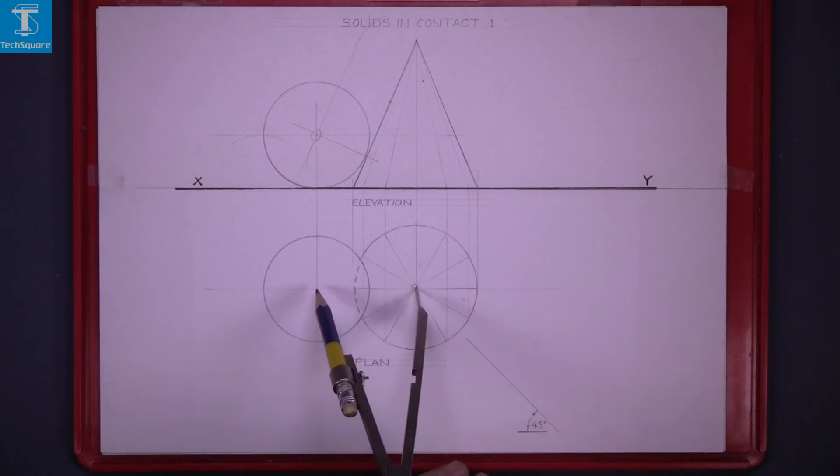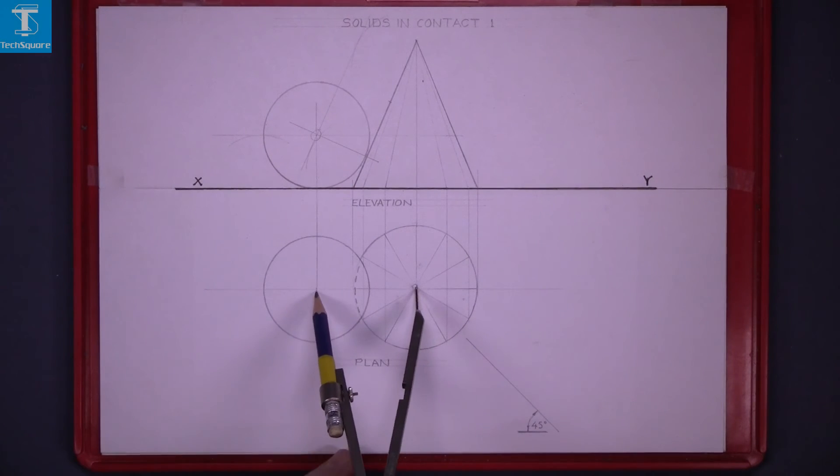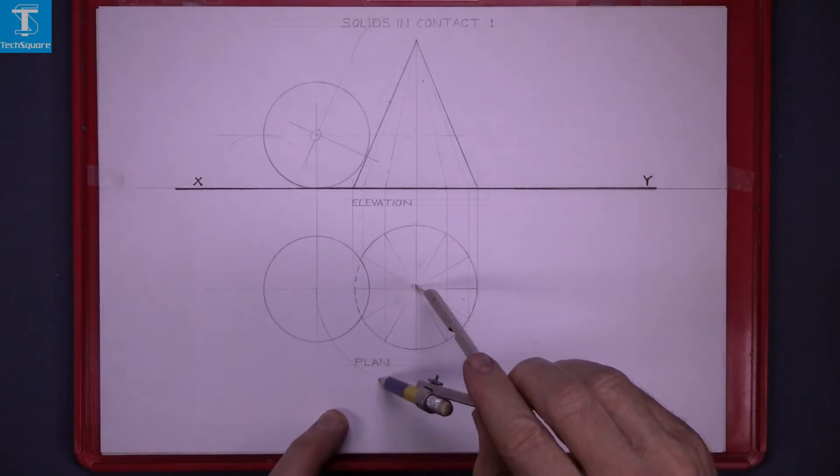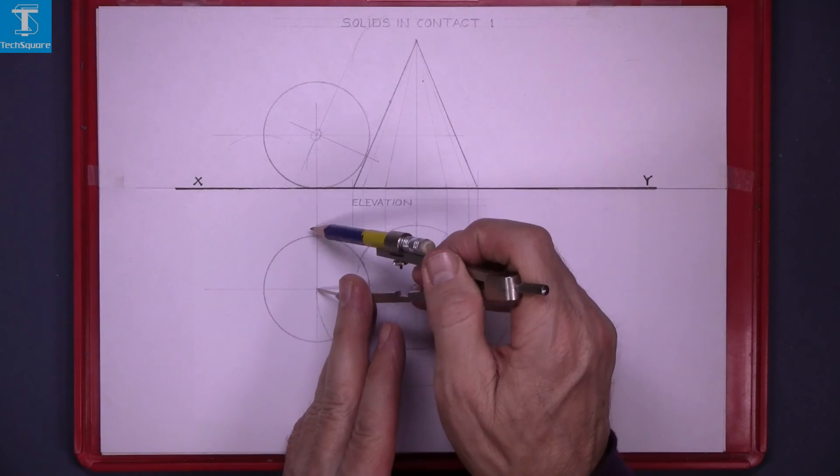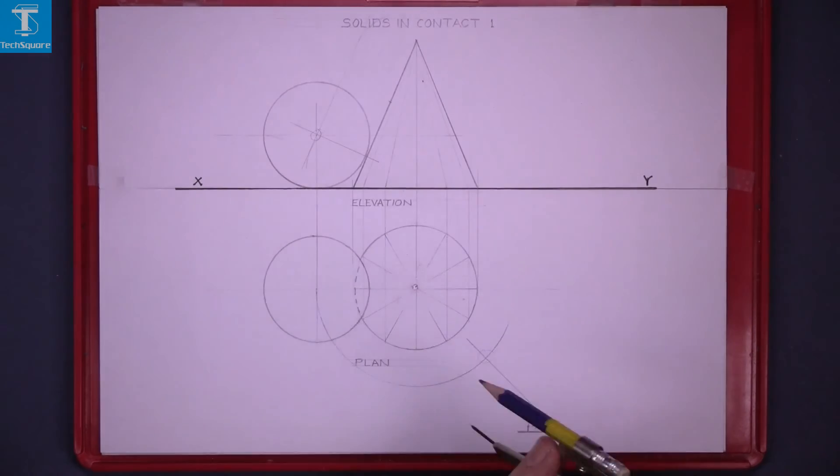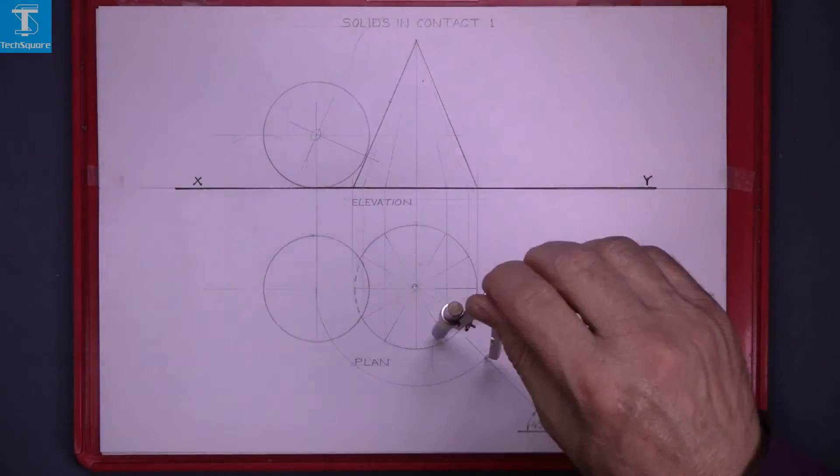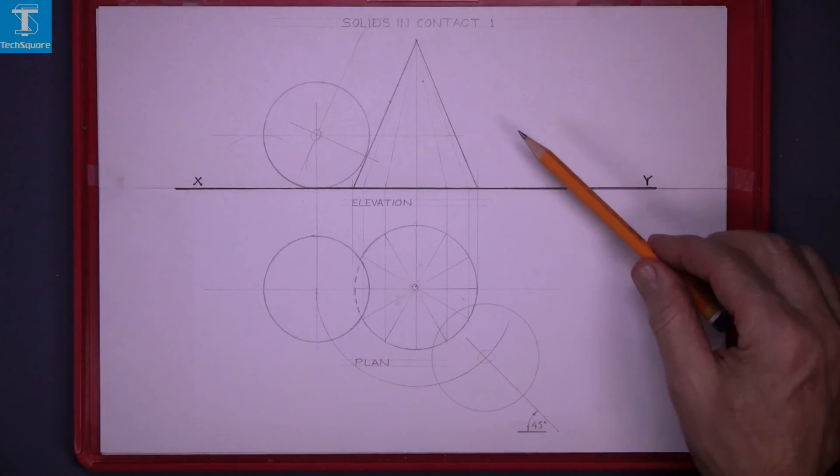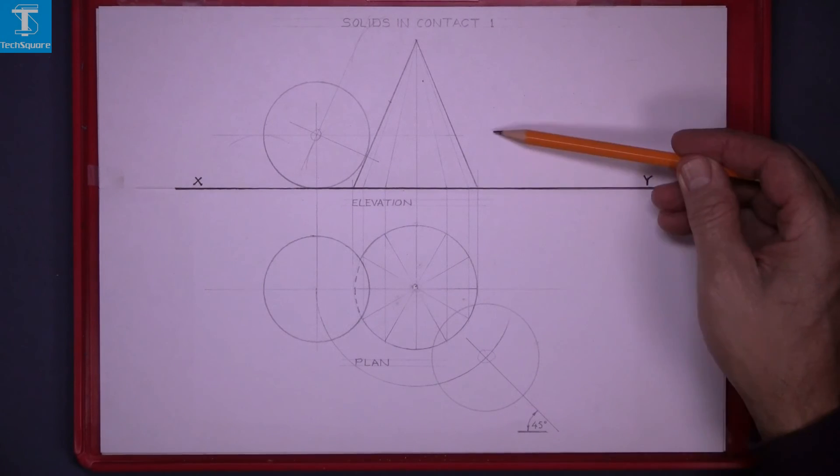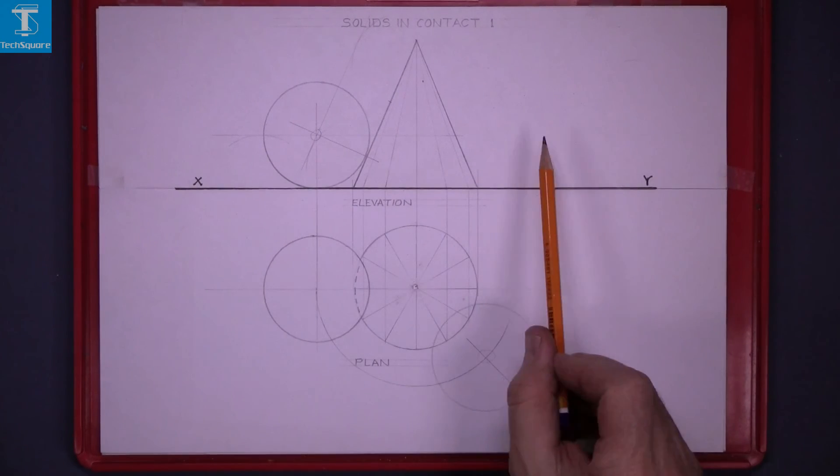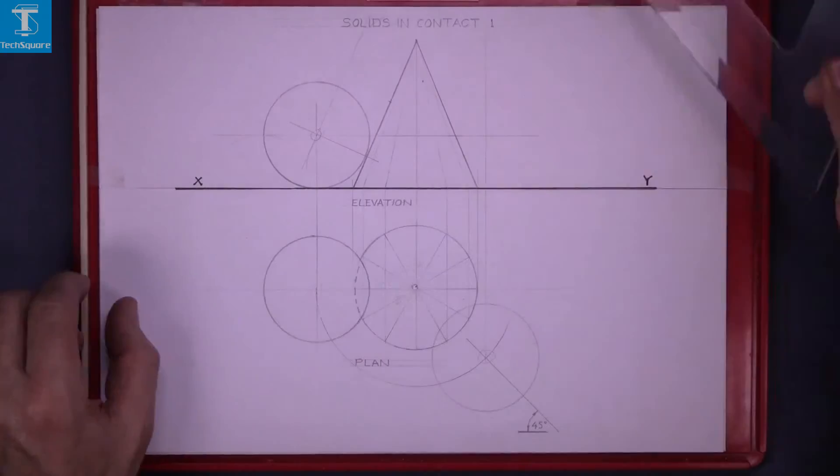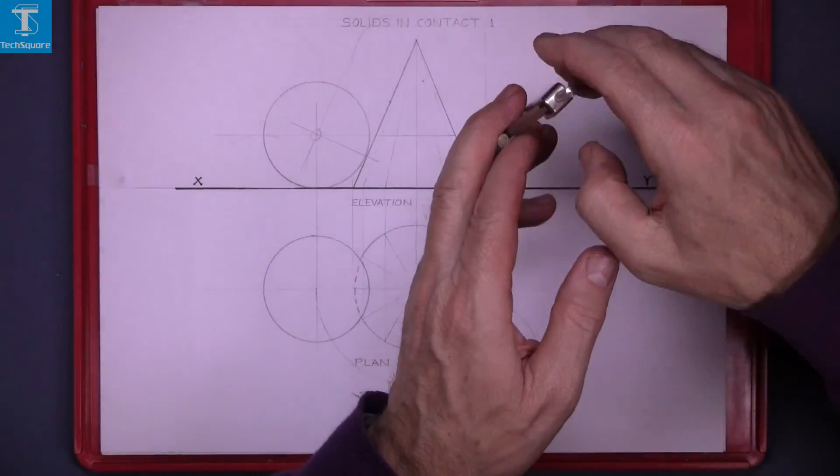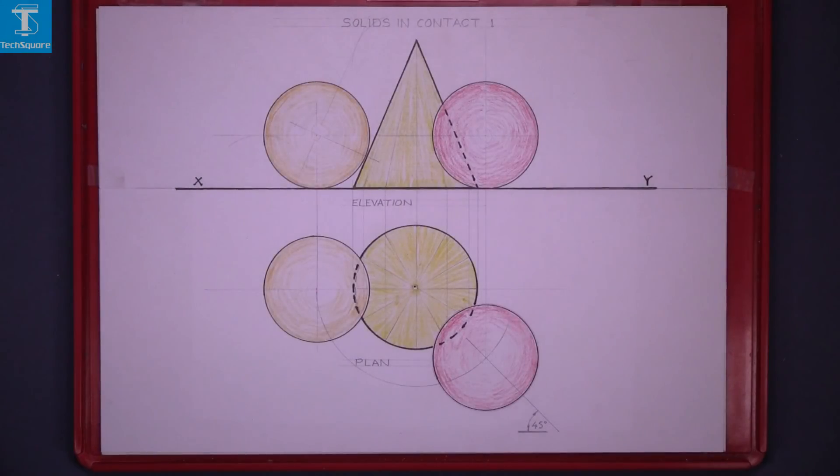With the compass set from the top of the cone to the center of the sphere, draw the arc. That gets us the center point. Now with the compass set to the radius of the sphere, draw in the sphere. That's solids in contact 1 complete.